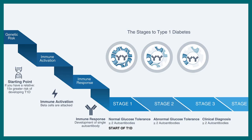The stages of type 1 diabetes are as follows: genetic risk, immune activation, immune response, and detection phases. There are many individuals with different genetic makeups who are more susceptible to type 1 diabetes, which will be covered in a separate video. This video was an overall summary of the immune reactions that happen in autoimmune type 1 diabetes and its complications.